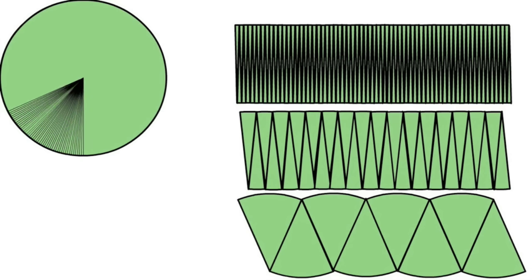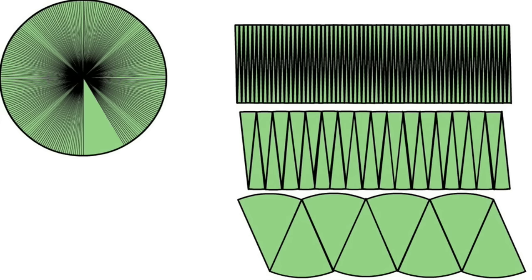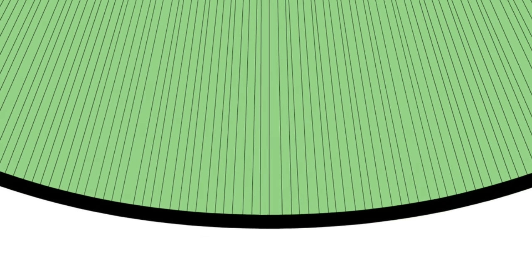So how small must we divide a circle before we can get a perfect rectangle? Well, we can keep on dividing the circle into smaller and smaller pieces.